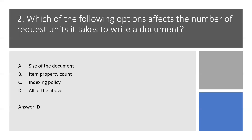What is item size? As the size of an item increases, the number of RUs consumed to read or write the item also increases. What is item property count? Assuming default indexing is on all properties, the number of RUs consumed to write an item increases as the item property count increases. What is item indexing? By default, each item is automatically indexed. Fewer RUs are consumed if you choose not to index some of your items in a container. Option D is the right answer.